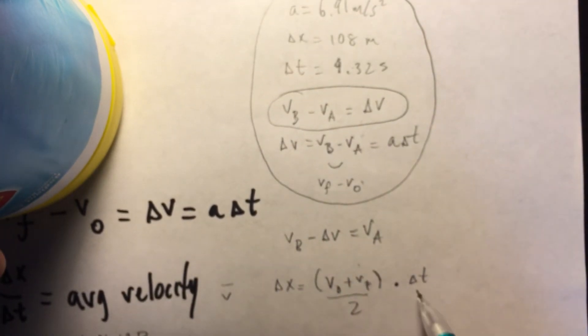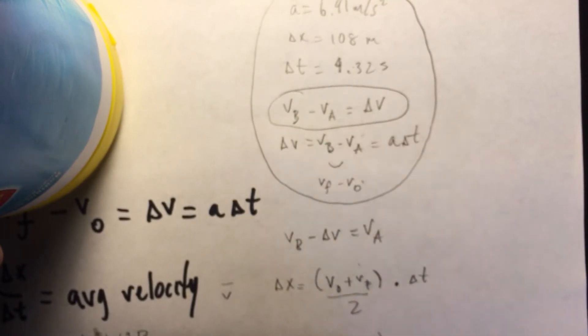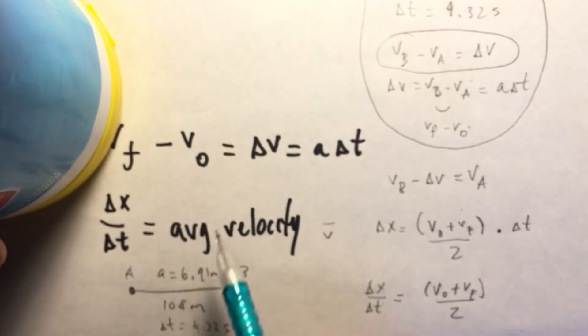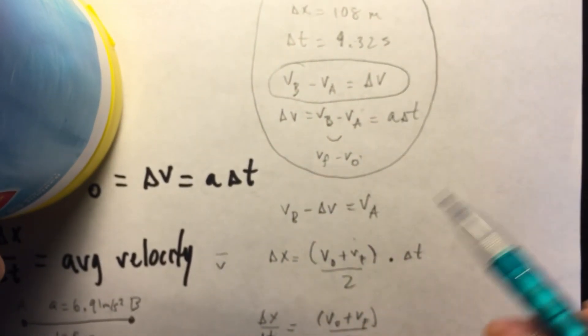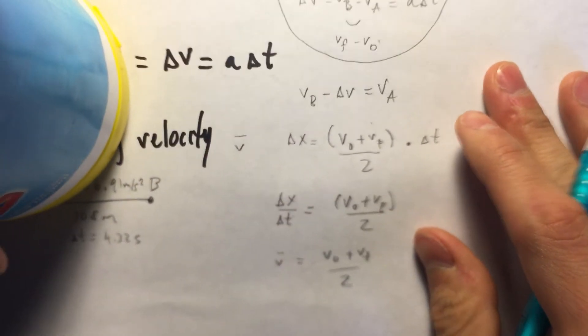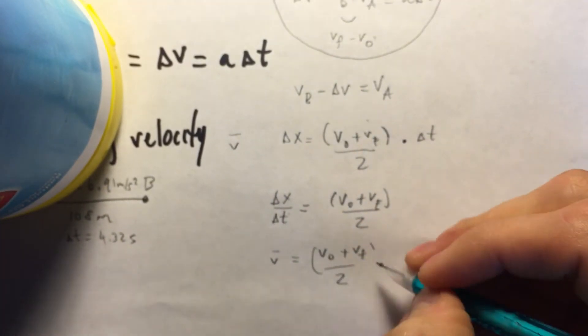Now, in order for us to do this, we have to divide by time to get an expression that says change in X over change in time equals V naught plus V final over 2. So this right here is what we had mentioned earlier, is the average velocity. So simply put, this could be the same as this. It can be the same.